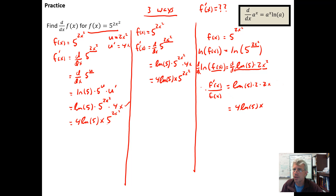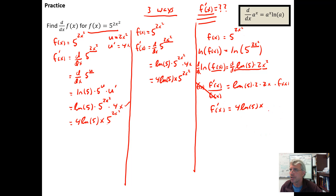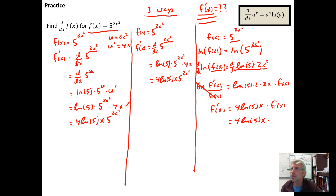Now we can multiply both sides by f(x) to isolate f prime of x. Replacing f(x) with the expression it represents — 5 to the 2x squared — we get the same answer as with both of the other methods: 4 times the natural log of 5 times x times 5 to the 2x squared.